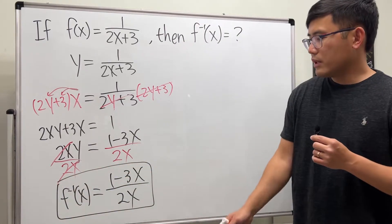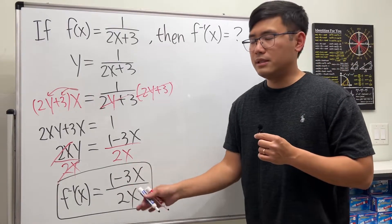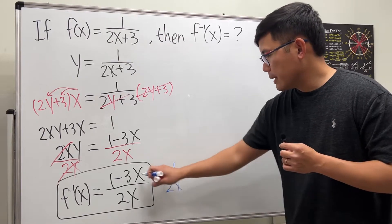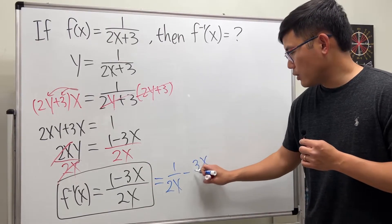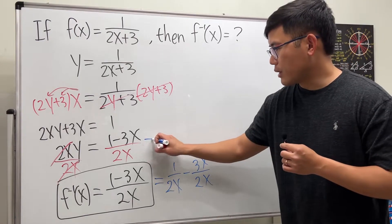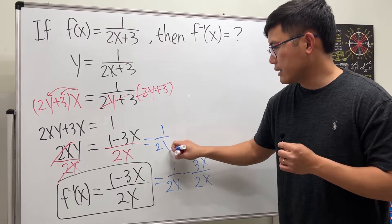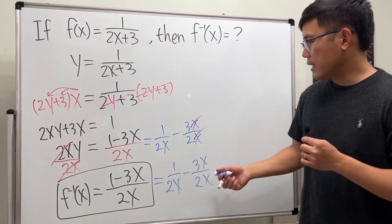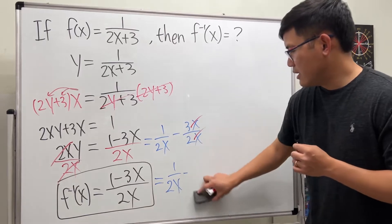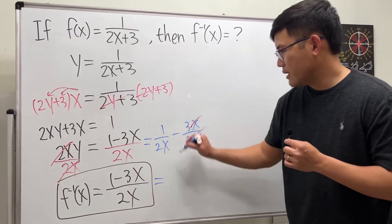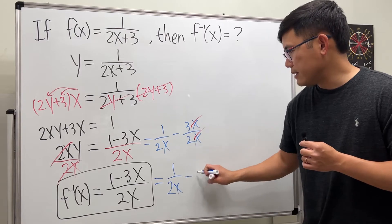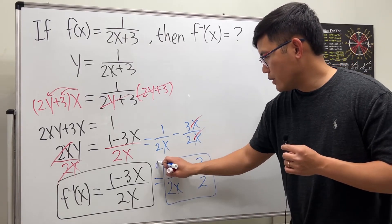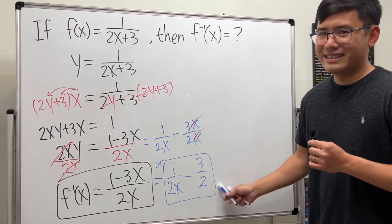However, before we go, let me just tell you if you choose to split this fraction, it's also okay. In that case, you write 1 over 2x minus 3x over 2x. Let me actually put it down here. It's 1 over 2x minus 3x over 2x. And if you do this, you can cancel out the 3. You don't have to do this though. You can also write the answer as 1 over 2x minus 3 over 2. So one way or the other, I think this is better, but anyway, that's it.